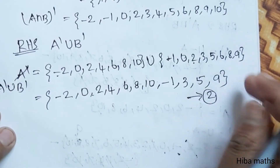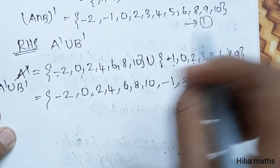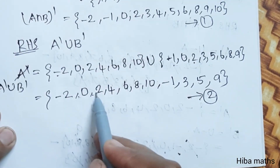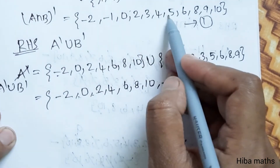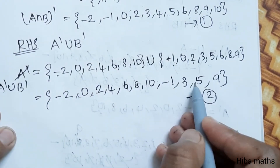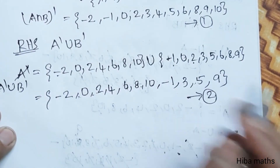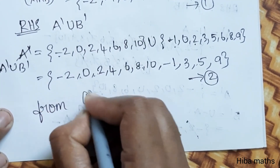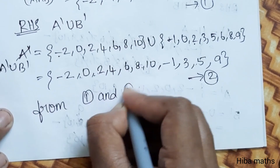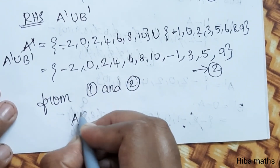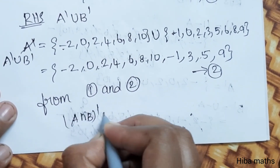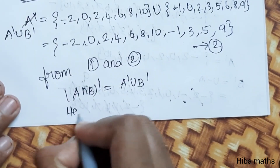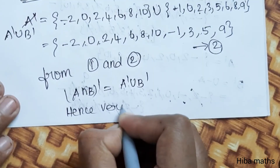Comparing first result and second result: both give the same answer. From 1 and 2, A intersection B whole dash is equal to A dash union B dash. Hence verified.